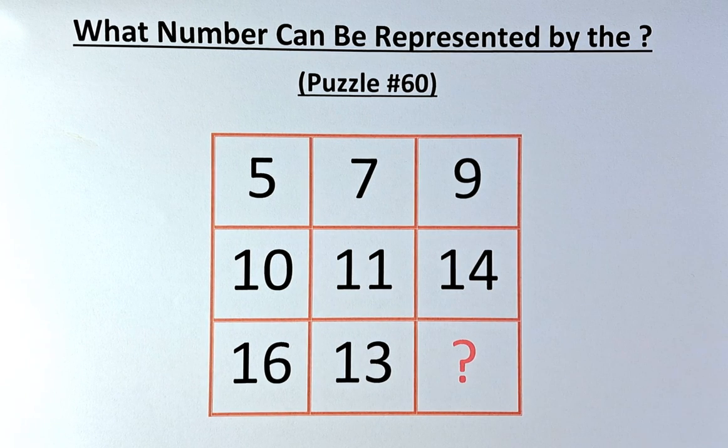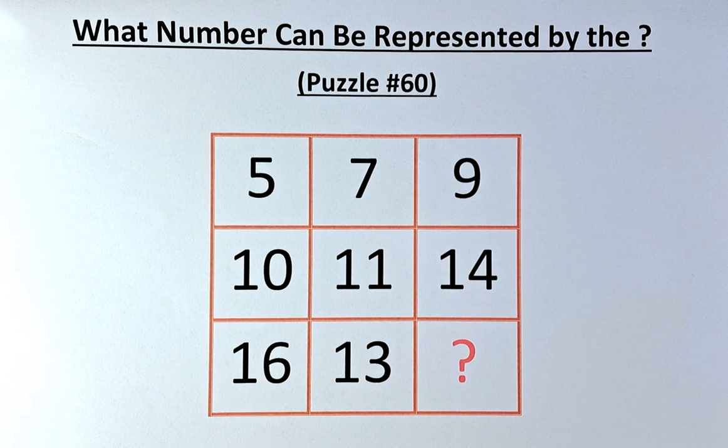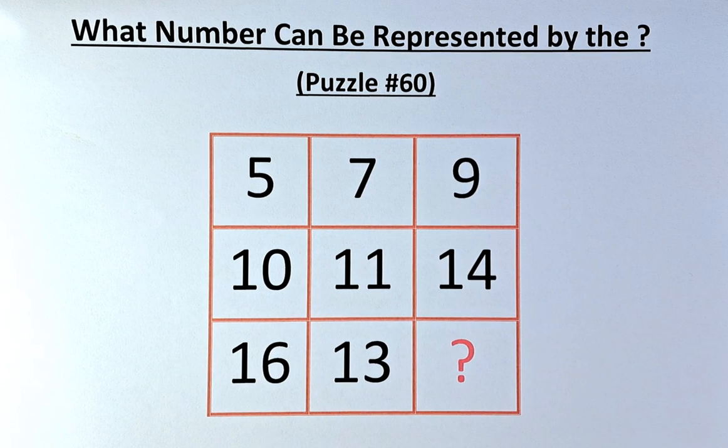The numbers in the puzzles are as follows. In the first row, we have 5, 7 and 9. In the second row, we have 10, 11 and 14. And in the final row, we have 16, 13 and the question mark.